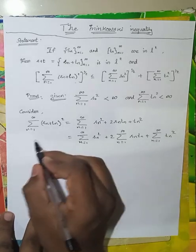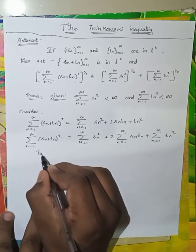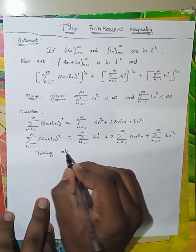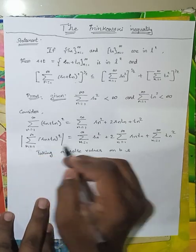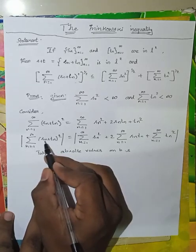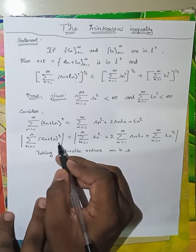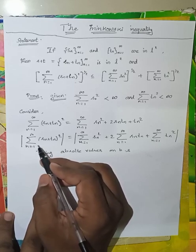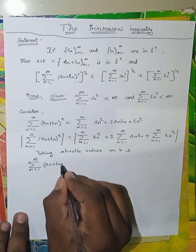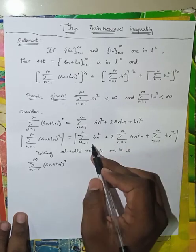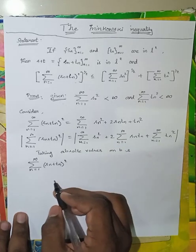Now, taking modulus on both sides — that is, taking absolute values on both sides — each and every term is non-negative since each term is a square. So taking modulus on both sides, we get summation n=1 to infinity of (Sn + Tn)². By the triangle inequality, since there are three terms, the modulus is always less than or equal to the sum of the individual moduli.